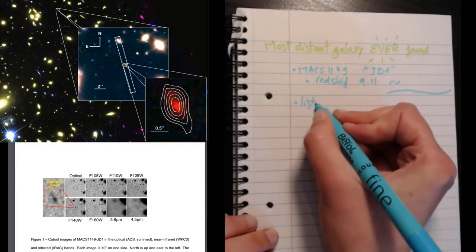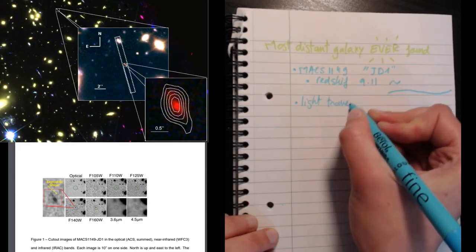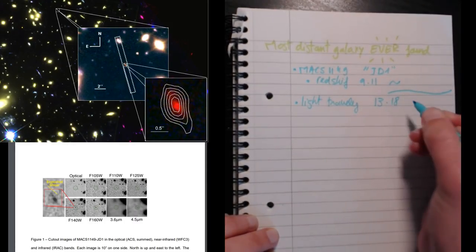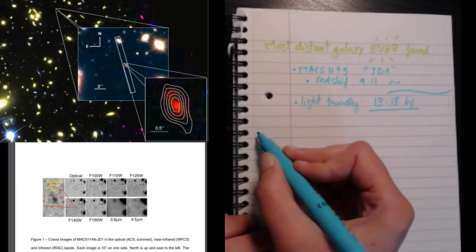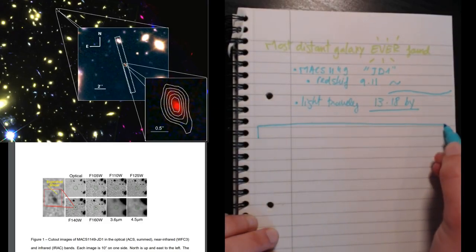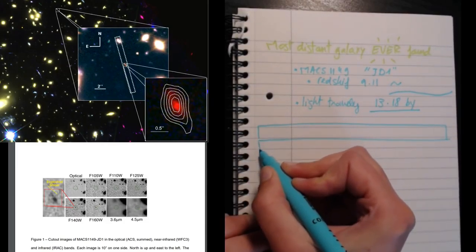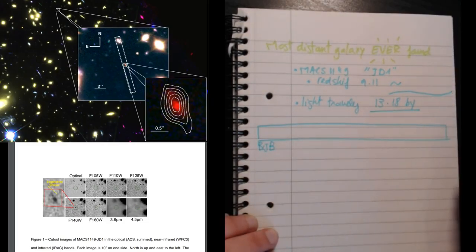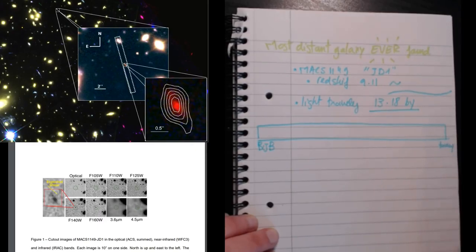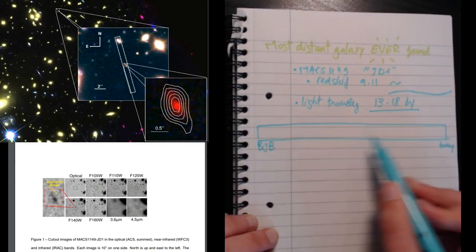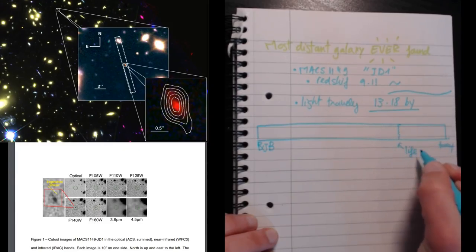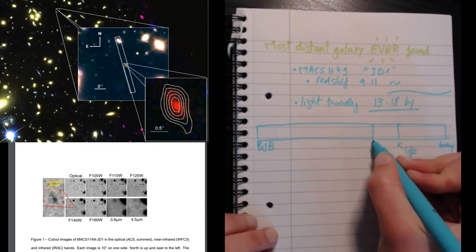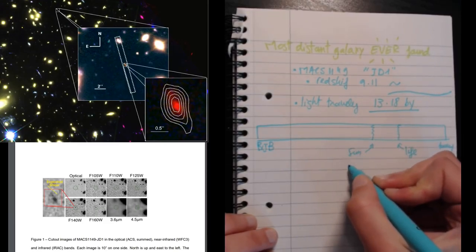Thus this light has travelled through the universe for 13.2 billion years. So to put that into perspective, if this is a timeline of the universe, with the big bang at the start, and us at the end today, let's say that on this scale life on earth has appeared around here. This is linear in time. And the sun and the earth formed around about here.